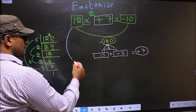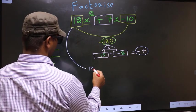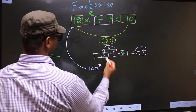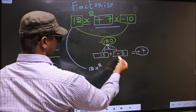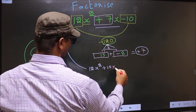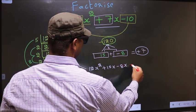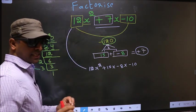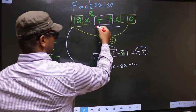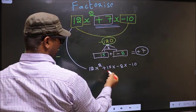Now you should change this to 12x square. In place of plus 7x, now we should be writing this: that is plus 15x minus 8x minus 10. In place of plus 7x, I have written this. Next.